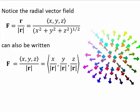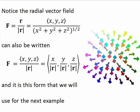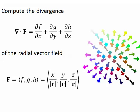Let's look at this radial vector field. Remember this radial vector field has the property that each vector has a unit length one. And I'm going to write it in a slightly different way here at the bottom. It is this form that we will use for the next example. What I'd like to do is compute the divergence of this radial vector field where all the vectors have length one.